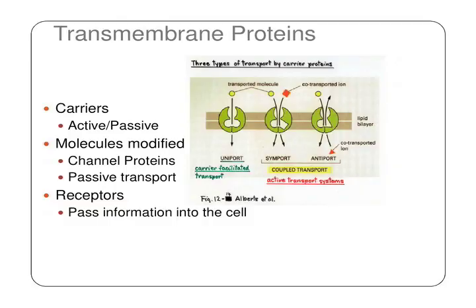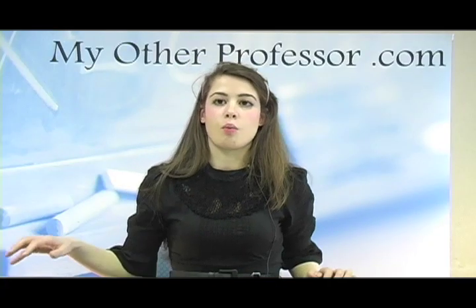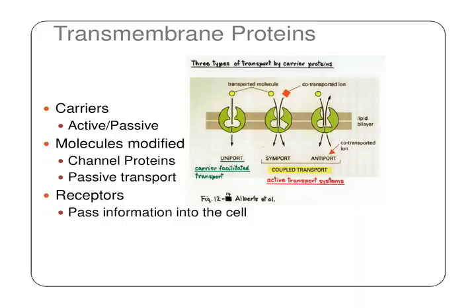In terms of other transmembrane proteins, there are carriers, which may be active or passive. The active type requires ATP for the molecule to move from one end of the membrane to the other. There are also channel proteins, which involve passive transport. And there are receptors, which pass information from one part of the cell to another.